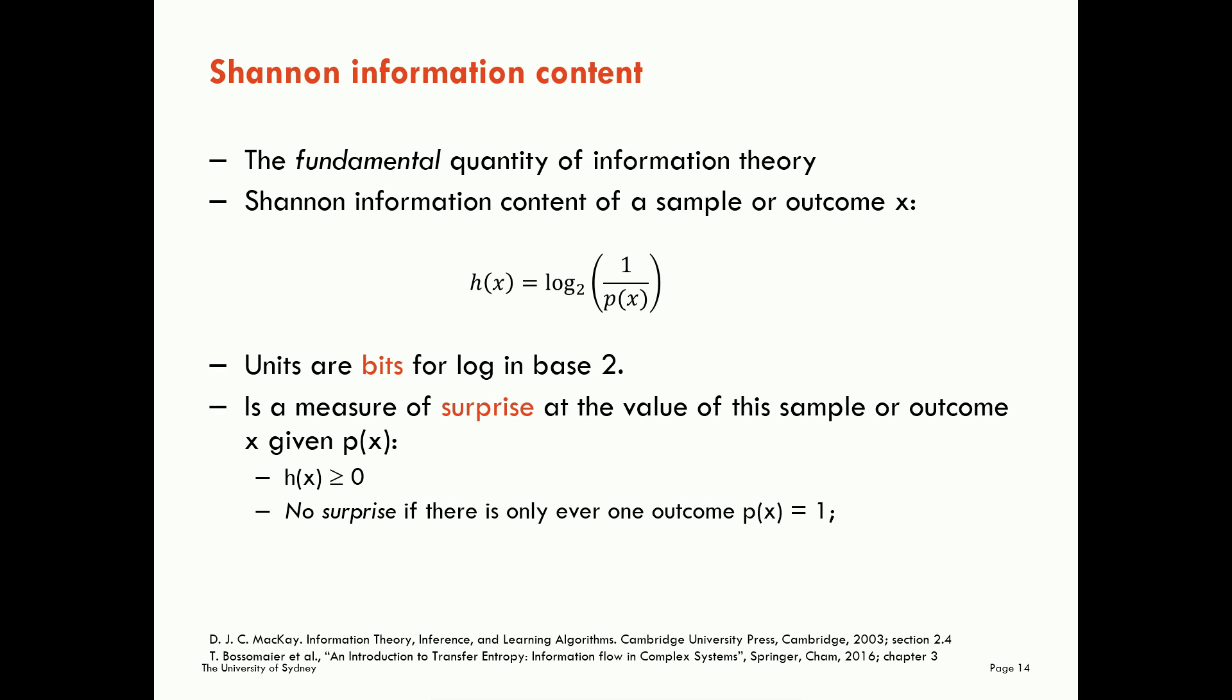To be more specific, as I say, if there's only ever one outcome, if only women ever walk through this door here and I ask the question, is the next person to walk through a man or a woman? I'm not going to be surprised at the next realisation that I measure because it has to be a woman. There's no surprise there. However, there is always some level of surprise if there exists more than one outcome with a non-zero probability. So if it's possible that either a man or woman could walk through that door, I will always have some level of surprise when I measure the next sample of that process. Always.